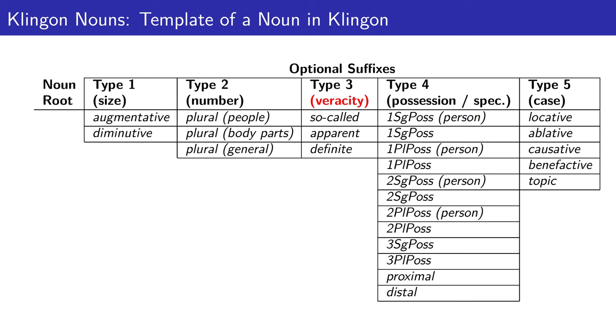Type 3 suffixes encode information regarding veracity, marking a noun as either so-called, apparent, or certain or definite.